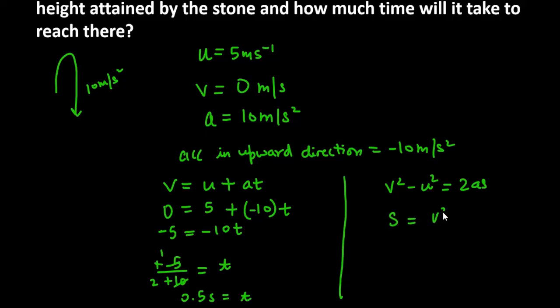To find s, we get s = (v² - u²) / 2a. v² is 0², u² is 5² which is 25. 2a where a is -10, so that's -20. This gives -25 / -20. Minus and minus cancel, giving 25/20 which equals 1.25 meters. So the s value is 1.25 meters, meaning the stone travels a distance of 1.25 meters.